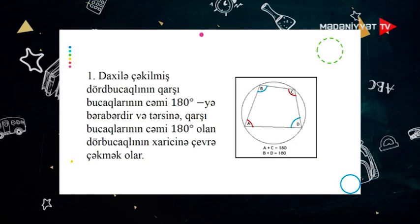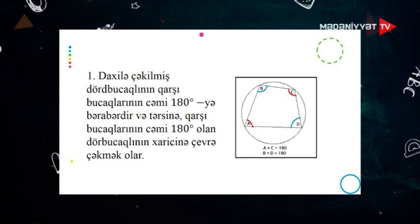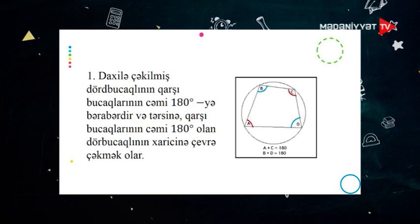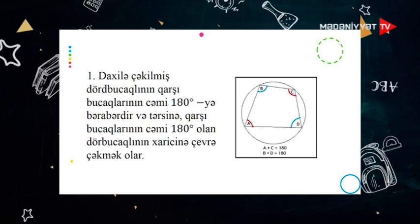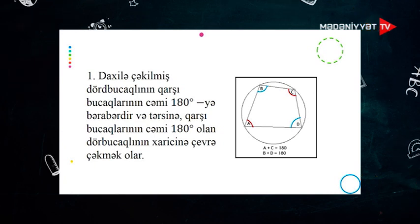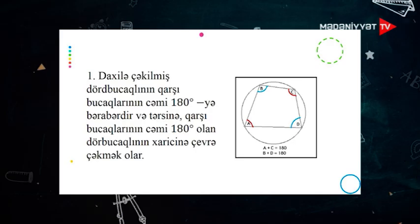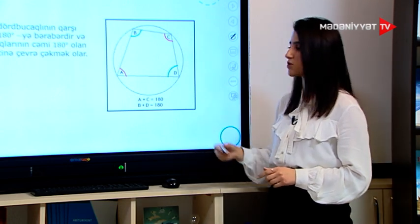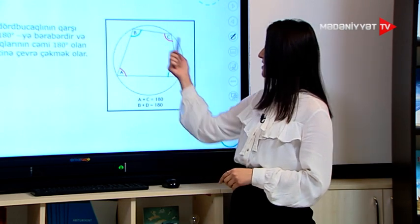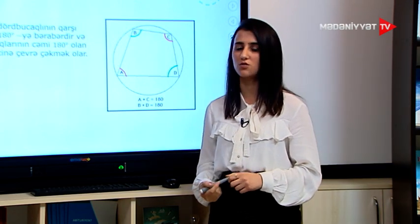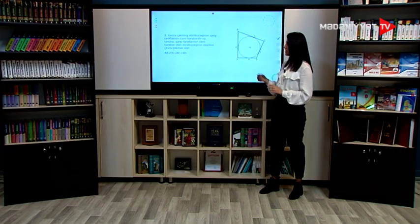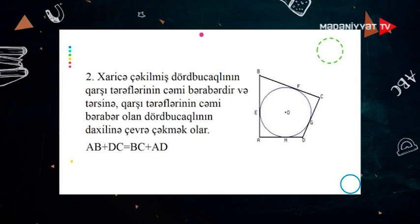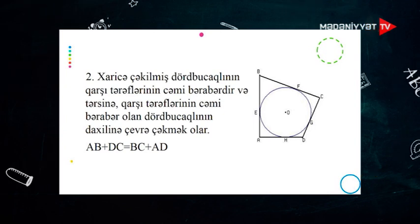İndi isə dörd bucaqlının daxilinə və xaricindən çəkilmiş çevrələrin xassələrinə baxaq. Daxilə çəkilmiş dörd bucaqlının qarşı bucaqlarının cəmi 180 dərəcəyə bərabərdir; yaxud da əksinə, qarşı bucaqlarının cəmi 180 dərəcə olan dörd bucaqlının xaricindən çevrə çəkmək olar. Xaricə çəkilmiş dörd bucaqlının qarşı tərəflərinin cəmi bərabərdir; yaxud da əksinə, qarşı tərəflərinin cəmi bərabər olan dörd bucaqlının xaricinə çevrə çəkmək olar.